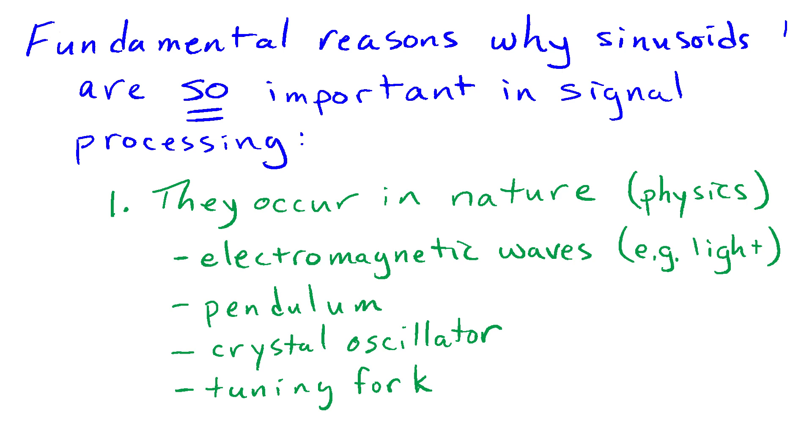So electromagnetic waves, such as light, a pendulum describes sinusoidal motion, crystal oscillators, a tuning fork oscillates in a sinusoidal fashion, and there's just an endless number of examples where sinusoids occur in nature.